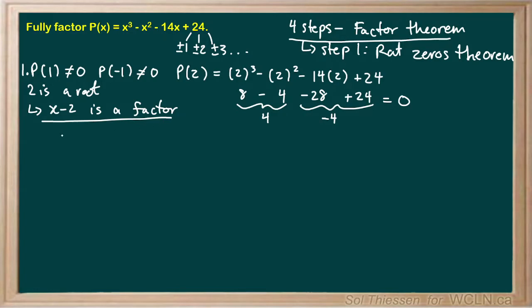So that's step 1 done. Now, on to step 2. We're going to divide our polynomial p of x by the factor we've just found, x minus 2. I'm going to do that synthetically, just to save time and a little bit of space.